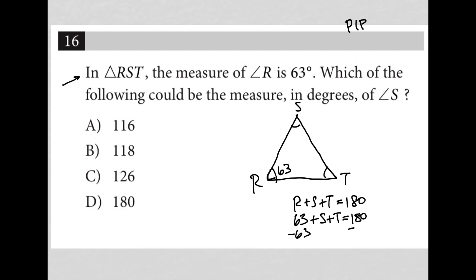And when I subtract 63 from here, I get that angle S plus angle T must be equal to 117 degrees. So in total, S and T can be no larger than 117.